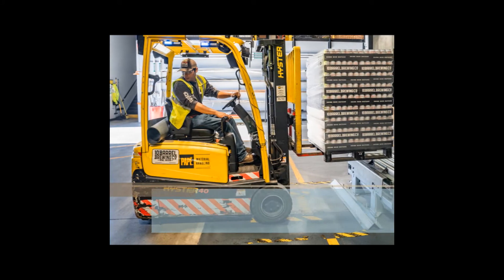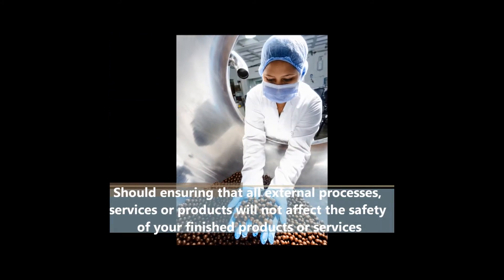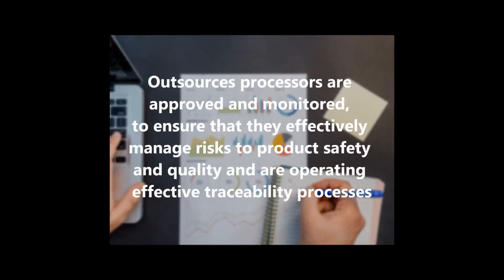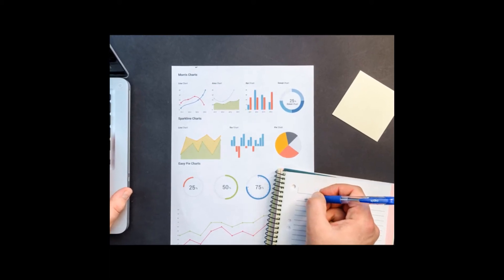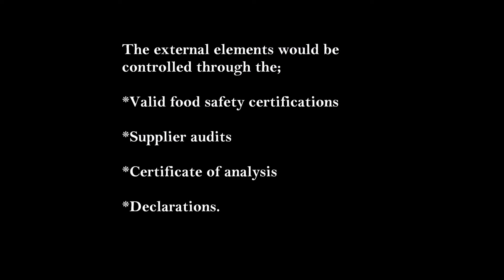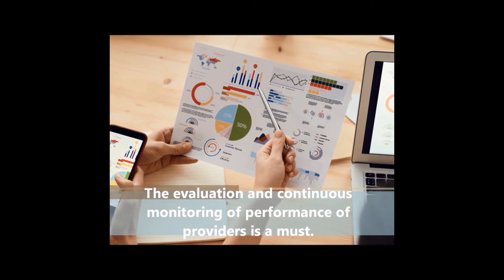The work environment can be easily controlled by the implementation of prerequisite programs. Externally developed elements of the food safety management system and control of externally provided processes, products or services — this section focuses on ensuring that all external processes, services or products will not affect the safety of your finished products. The company should ensure that outsourced processes are approved and monitored to effectively manage risks to product safety and quality, and are operating effective traceability processes. External elements would be controlled through valid food safety certifications, supplier audits, certificates of analysis and declarations. The evaluation and continuous monitoring of performance of providers is a must.